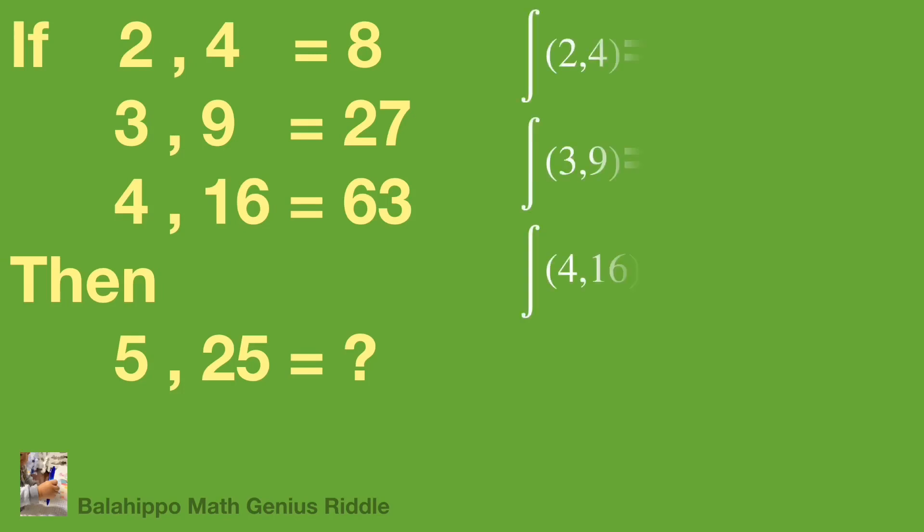So we define: f(2, 4) = 8, f(3, 9) = 27, and f(4, 16) = 63.